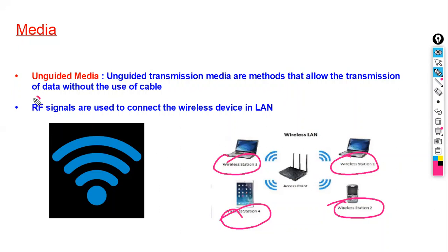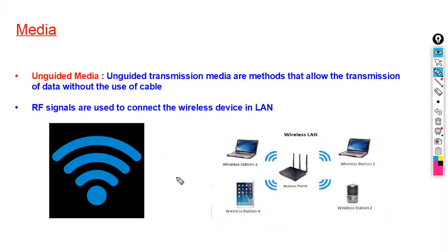You will use the RF signals. You will have an access point, and using this access point you will connect these wireless devices and they will start communicating with each other. This is called unguided media, and the best example of unguided media is Wi-Fi.